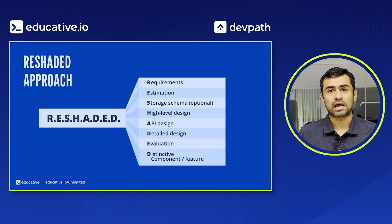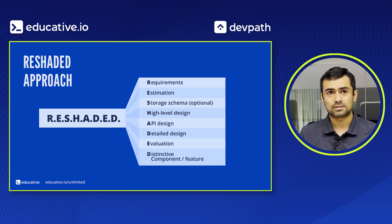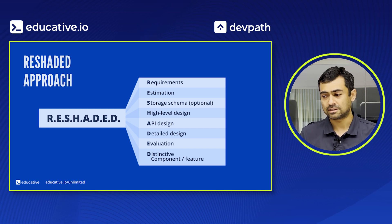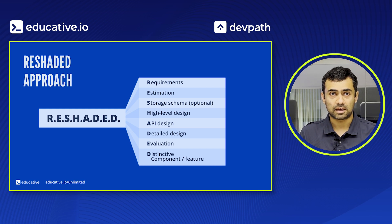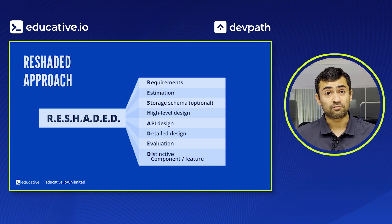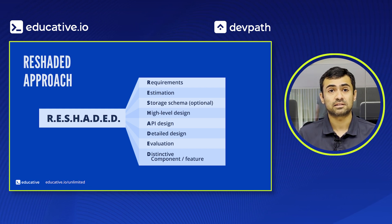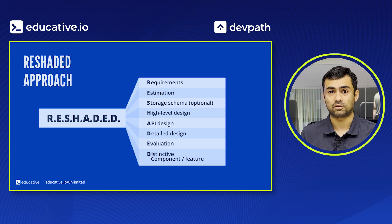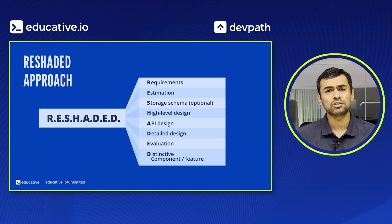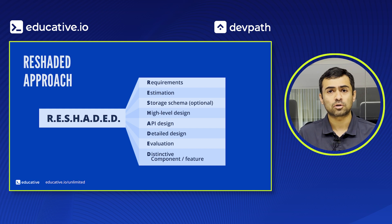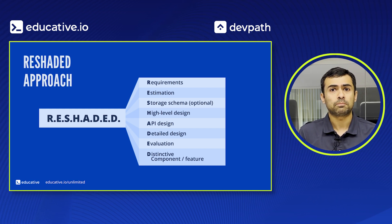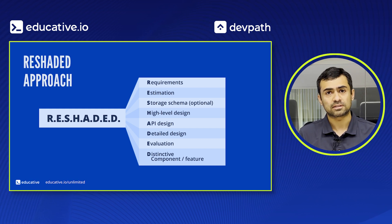The RESHADED approach helps you design systems. It starts from an acronym comprising Requirements, Estimations, Storage schema, High-level design, API design, Detailed design, Evaluation of your design, and Distinctive components. It's a generic formula to address all the important parts of your system design.